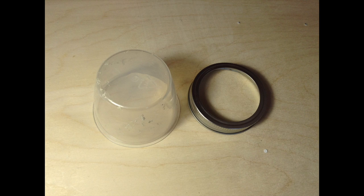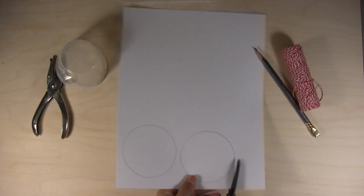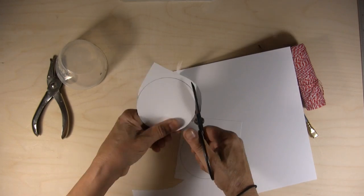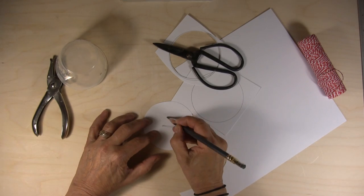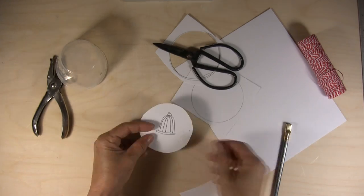Some cardstock, a jar lid to make circles with, a hole punch or a pokey stick, some scissors, some string, pencil, maybe a bamboo skewer.